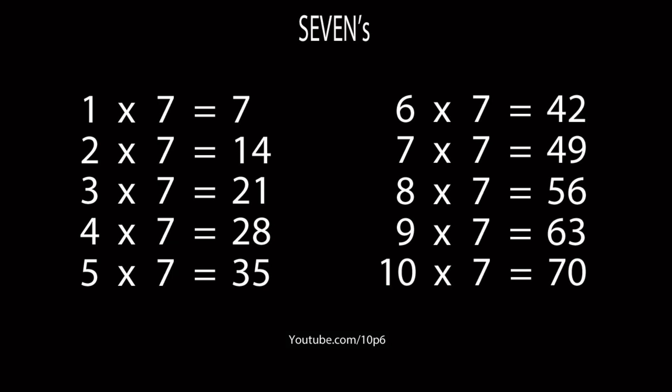7s. 1 7 is 7, 2 7s are 14, 3 7s are 21, 4 7s are 28, 5 7s are 35, 6 7s are 42, 7 7s are 49, 8 7s are 56, 9 7s are 63, and 10 7s are 70.